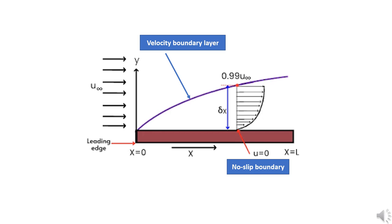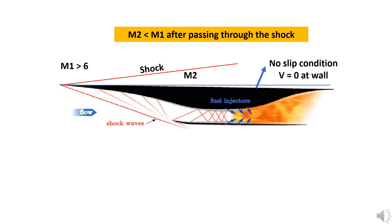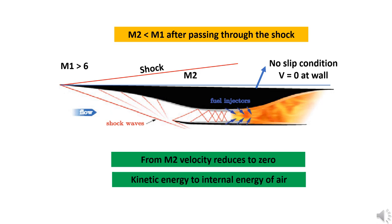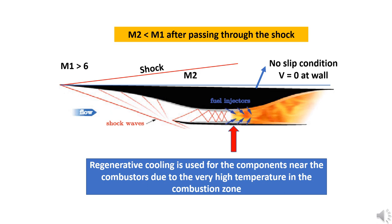Since in hypersonic flow the free stream flow is at very high velocity, when it slows down to become zero at the walls the kinetic energy of the flow will be converted to internal energy and the temperature of the air near the walls will increase to very high values. At some points in the missile trajectory it may reach several thousand degrees which will melt any metal. To prevent it, several layers of exotic materials like titanium and nickel based alloys with high temperature coatings will be used based on the heat transfer at the particular region of the missile body.